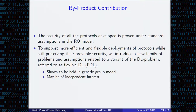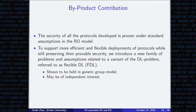As a by-product contribution, the security of all protocols developed in this work is proven secure under standard assumptions in the random oracle model. To support more efficient and flexible deployment while still preserving proper security, we introduce a new family of problems and assumptions related to a variant of the discrete logarithm problem, referred to as FDL. We prove its hardness in the generic group model, and it may be of independent interest, particularly to leakage-resilient cryptography.